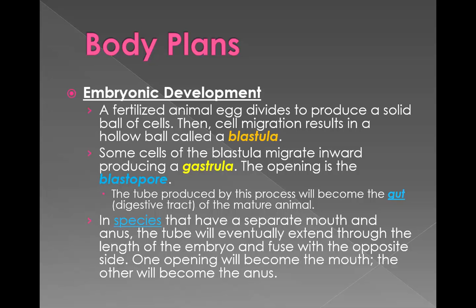Looking at body plans in embryonic development: the fertilized egg makes a hollow ball of cells called a blastula. Some cells of the blastula begin to invaginate inward, producing a gastrula. The opening is the blastopore, which eventually becomes a gut. If the species has a separate mouth and anus, the tube extends through the length of the embryo — one opening becomes the mouth and the other becomes the anus.